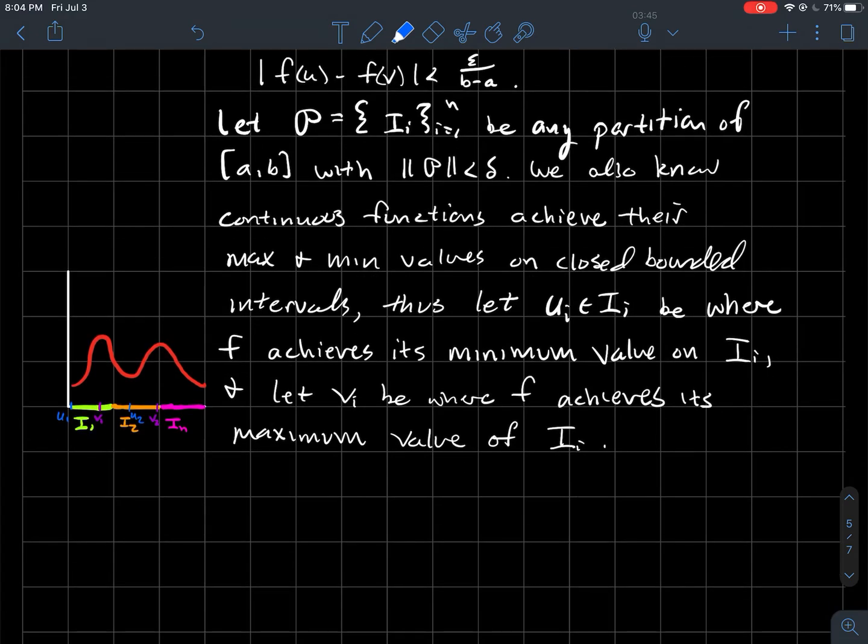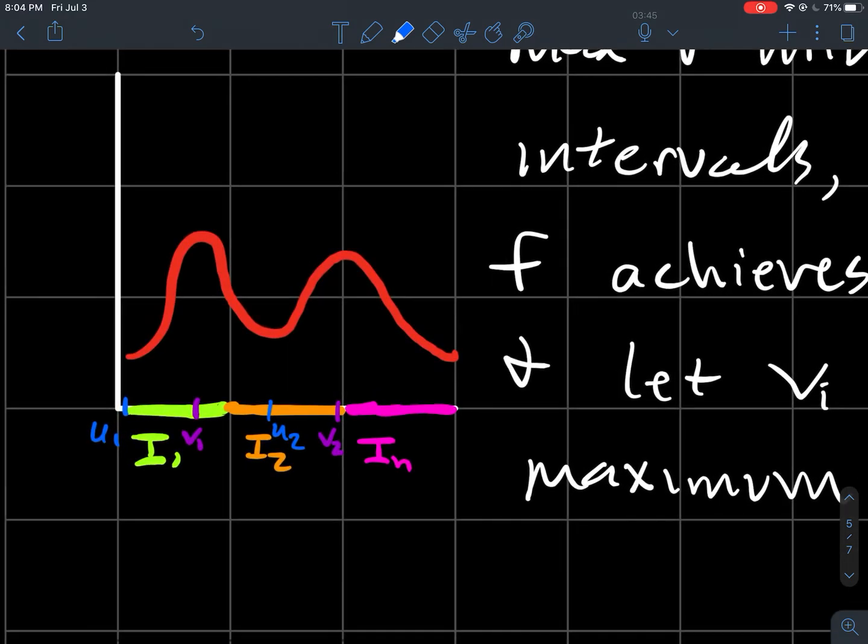And I've tried to draw you a picture here just to show what I'm saying. So at U1, I see that's where my function's lowest on this first sub-interval I1 here, and V1 is where my function is tallest on this first sub-interval. Then I move, say, to the second sub-interval in my partition, which I've just drawn you a picture, labeled it orange here. So U2 is the next lowest, and V2 is the next highest, and carry on that way.